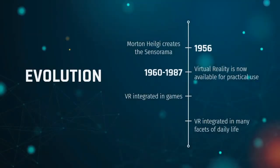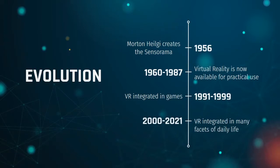This is an evolutionary timeline of virtual reality. In the early 50s we have the Sensorama — a three-dimensional television. Going through the early 60s up to 1987, virtual reality was developed to a point where the technology became available for practical uses. From the early to late 90s, we start seeing virtual reality integrated into more commercial uses like video games, as opposed to government and scientific projects.